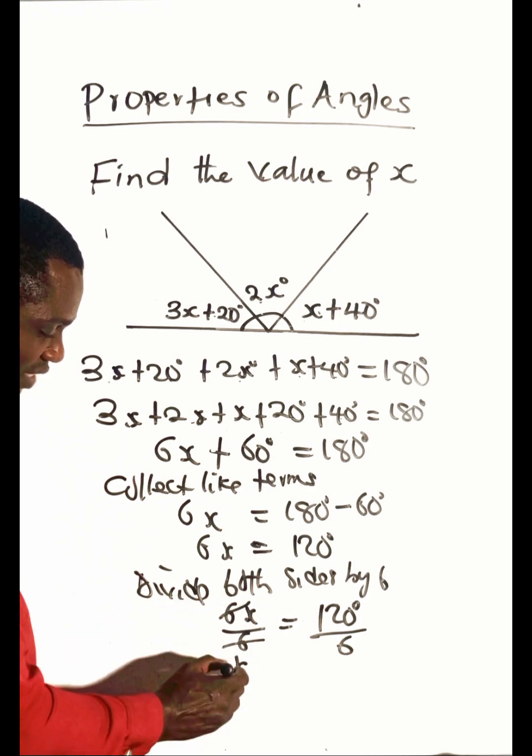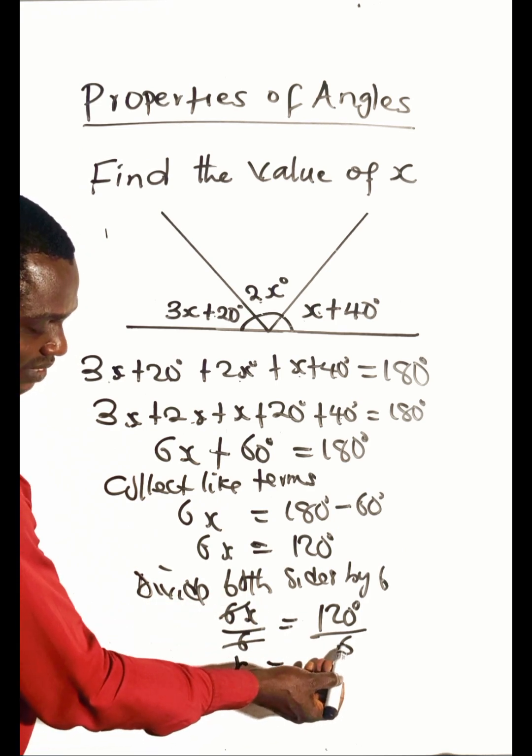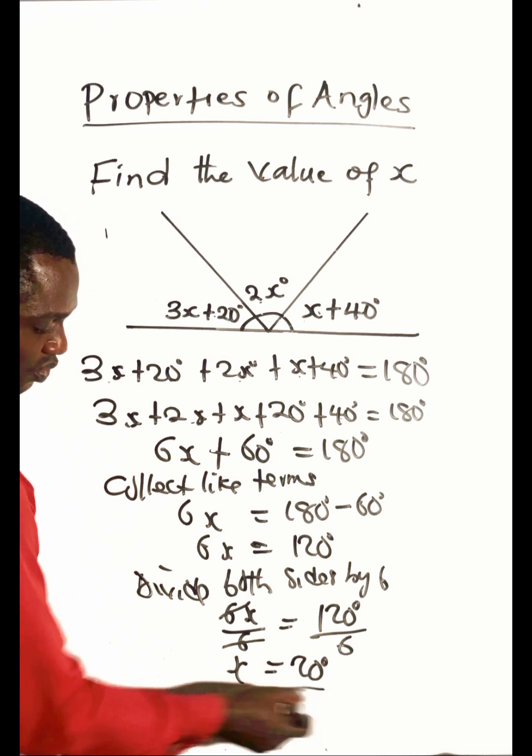When 6 divides 6x, x remains, and 6 dividing 120 gives us 20 degrees. So the value of x is 20 degrees.